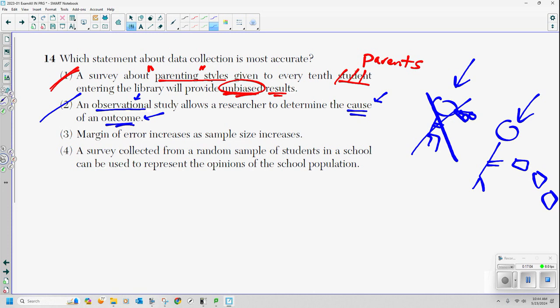Three, margin of error increases as sample size increases. No. So the more people that you take data on, that lessens your chance for any sort of error, because you're becoming more accurate at it. This decreases. So by default, a survey collected from a random sample of students at a high school can be used to represent the opinions of the school population. Yes, true, number four. How come? We're asking students about the school population, which is made up of students. There you go, choice four.